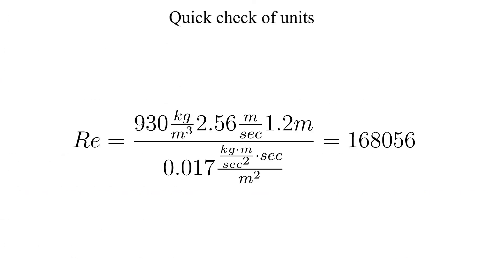Okay, we did that rather quickly. Let's check our units. The Reynolds number is a dimensionless number so all the units should cancel. Let's check that here. Looks like we're good.